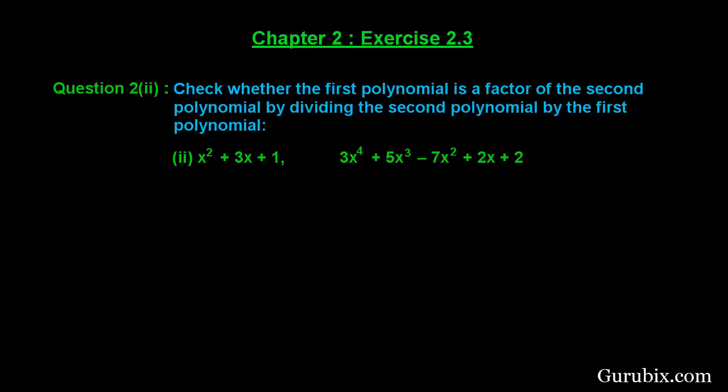Welcome friends. Let us solve the second part of question number 2 of exercise 2.3 of chapter 2. The question says: check whether the first polynomial is a factor of the second polynomial by dividing the second polynomial by the first. The first polynomial is x squared plus 3x plus 1, and the second polynomial is 3x to the 4th power plus 5x cubed minus 7x squared plus 2x plus 2.